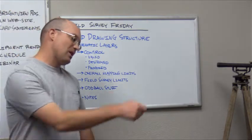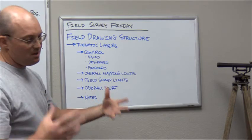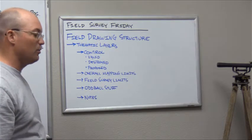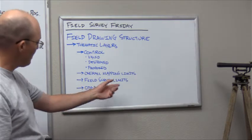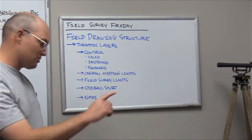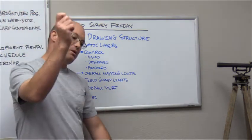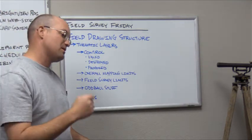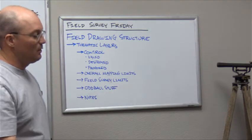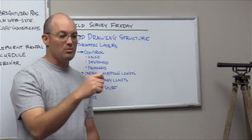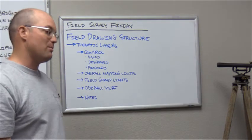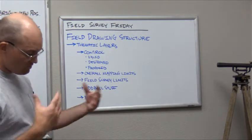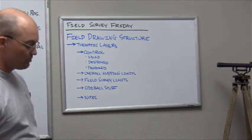Then we have a layer where we cloud oddball stuff that came up — a semi truck parked on a manhole, a manhole with no pipes in it, all kinds of things you find in the field. And then just notes: multi-line notes about interesting, odd, or unusual things the crew found, or things you want the next data processor to be aware of — for example, that a control point was set as an ink X instead of the usual mag nail or rebar and cap. You leave notes so people can retrace your field work.